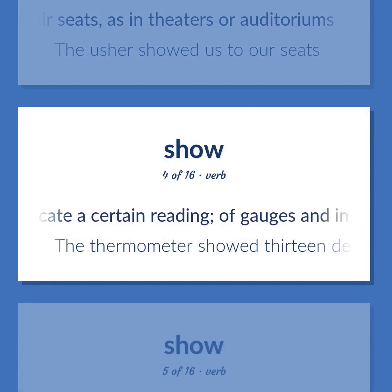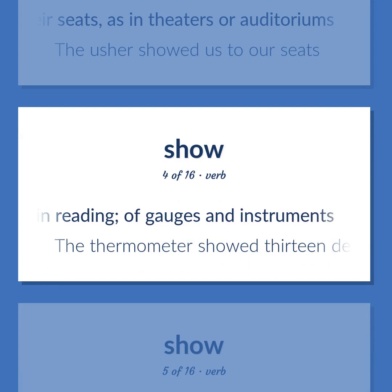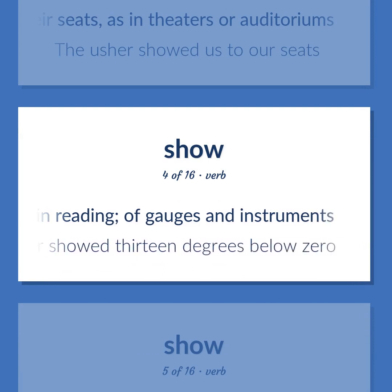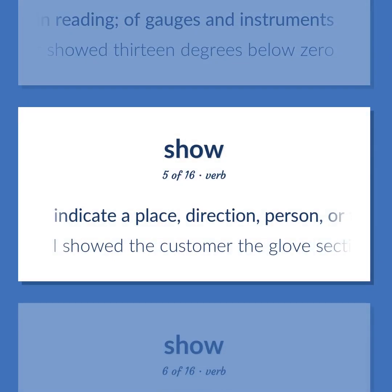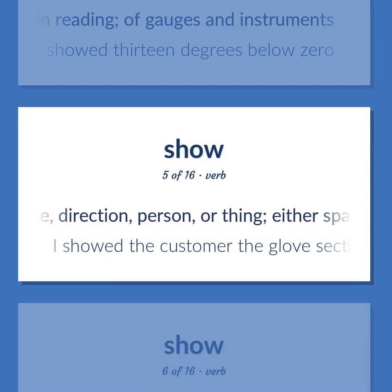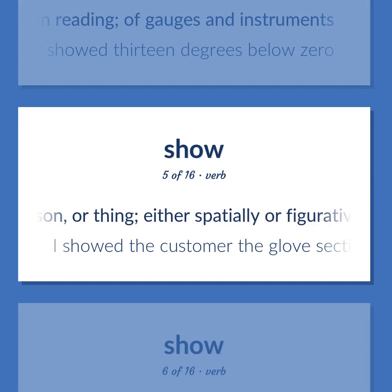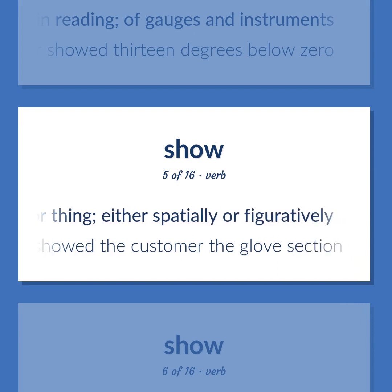Show: Indicate a certain reading of gauges and instruments — the thermometer showed 13 degrees below zero. Indicate a place, direction, person, or thing, either spatially or figuratively — I showed the customer the glove section. Show in, or as in, a picture.